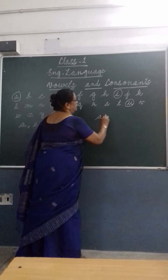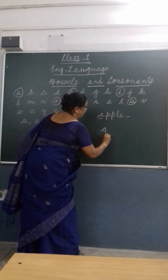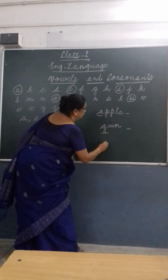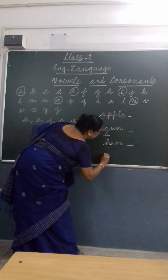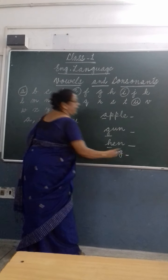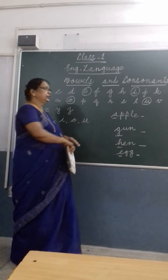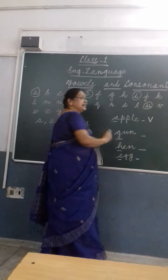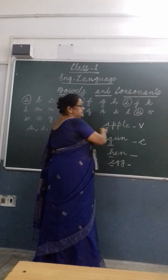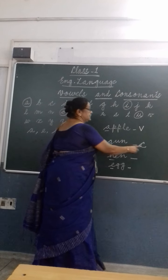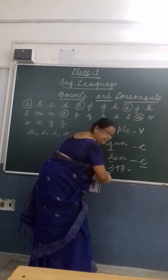I will show you some examples with words beginning with vowels and consonants. First, apple — apple begins with A. Then gun — gun begins with G. Then hen — hen begins with H. Then the letter E — E is a vowel. You look at the first letter of each word, and if the first letter is a vowel sound, you write V. If it is a consonant, you write C. So apple is a vowel — write V. Gun is a consonant — write C. Hen begins with H, which is a consonant — write C. And E is a vowel sound — write V.